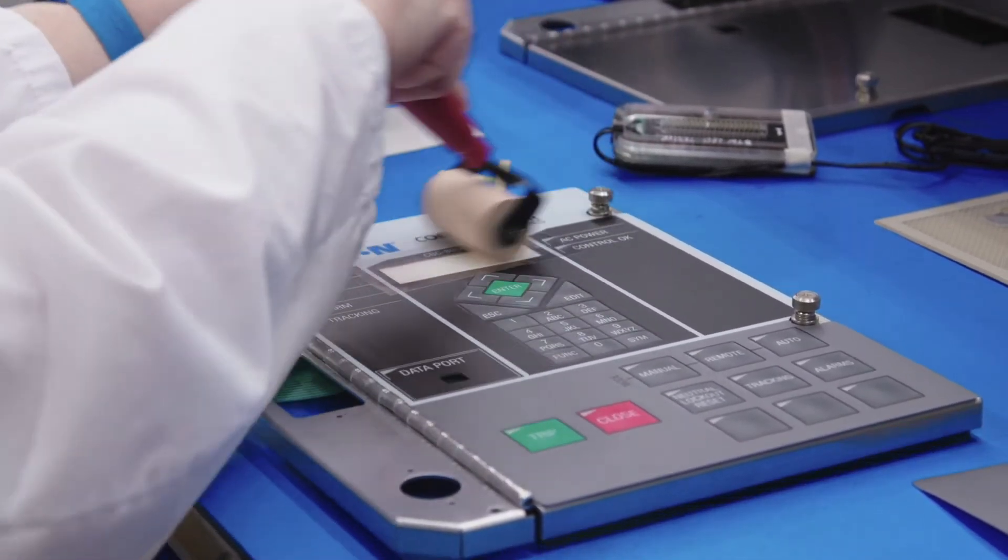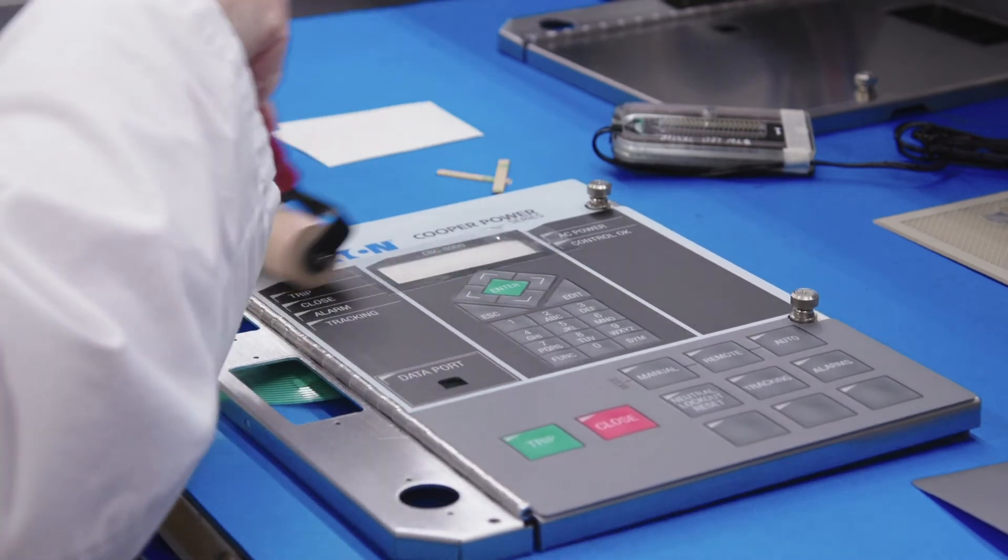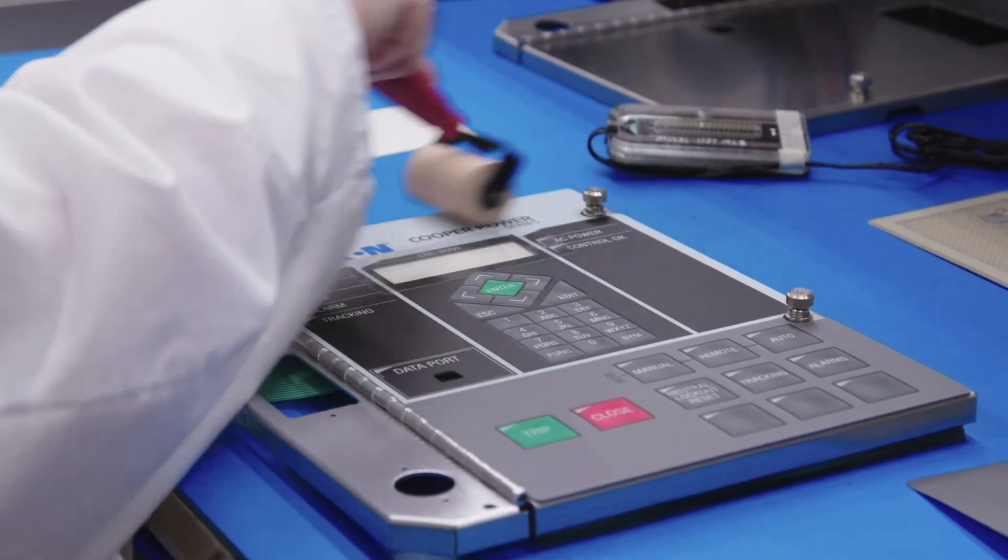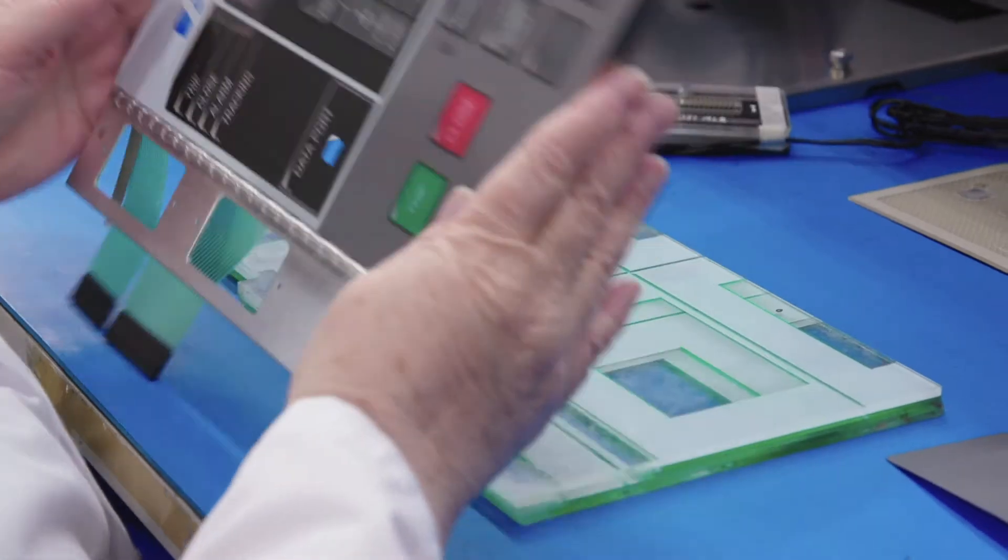Right there, the roller going over that LCD display is why it's critical to have that support in there that we built into the fixture.